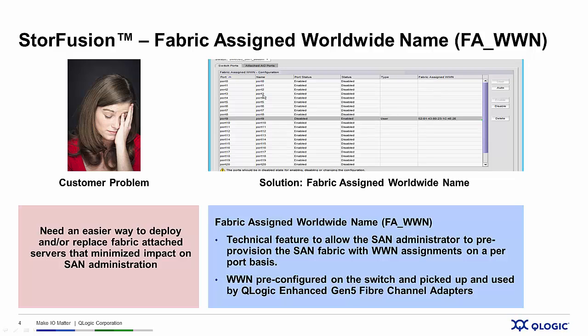With no servers, there's no way to determine the worldwide names of each of the host fiber channel connections. That means that Sarah and her team can't do the zoning, and they'll be asked to do a rush job at the last minute to get the job done. That means late nights and long weekends, and nobody likes that.